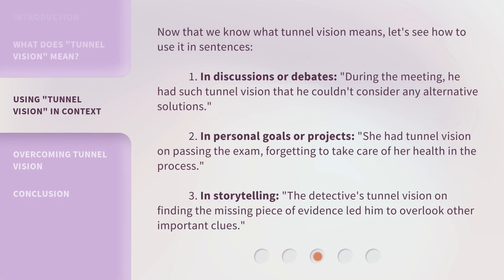Now that we know what tunnel vision means, let's see how to use it in sentences. In discussions or debates: during the meeting, he had such tunnel vision that he couldn't consider any alternative solutions. In personal goals or projects: she had tunnel vision on passing the exam, forgetting to take care of her health in the process. In storytelling: the detective's tunnel vision on finding the missing piece of evidence led him to overlook other important clues.